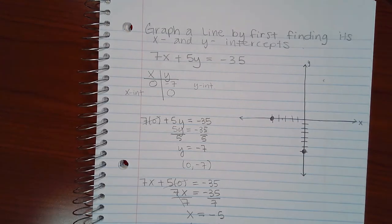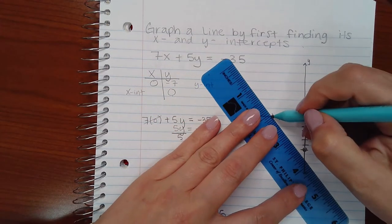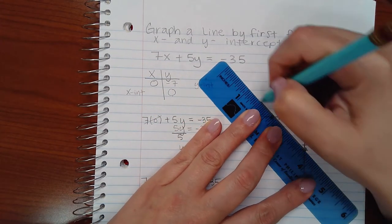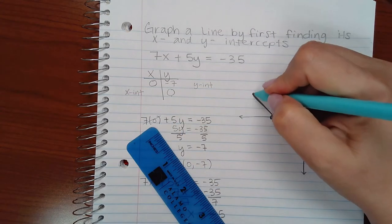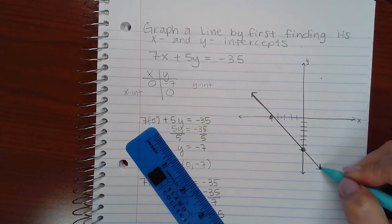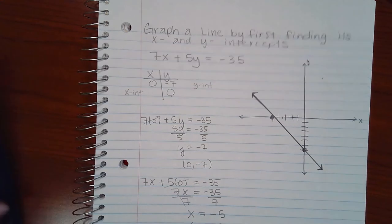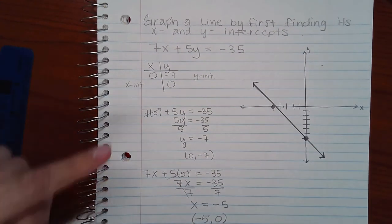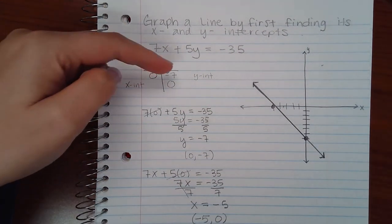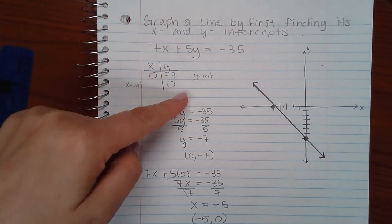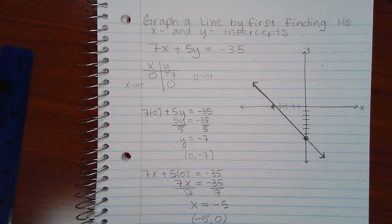And then I can draw the line that goes through both of those two points. This is the line that they were referring to. So just plug in zero for x to find the y-intercept, plug in zero for y to find the x-intercept.